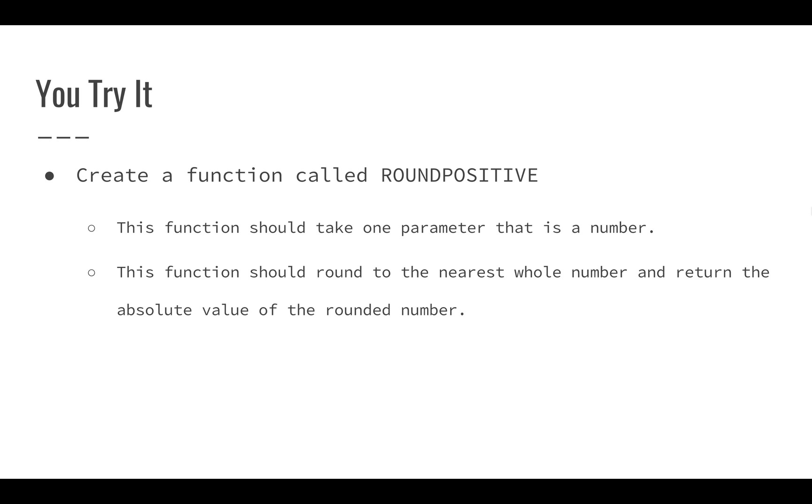The last function that you should create is one called roundPositive. This should take one parameter that is a number, and it should just round it and then return the absolute value of the rounded value.